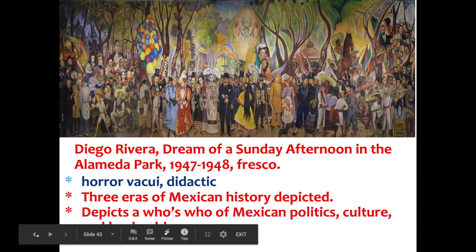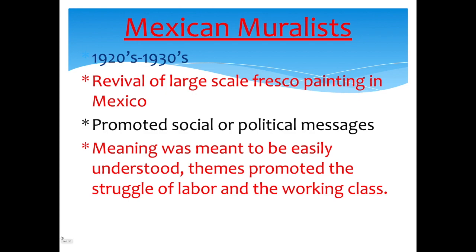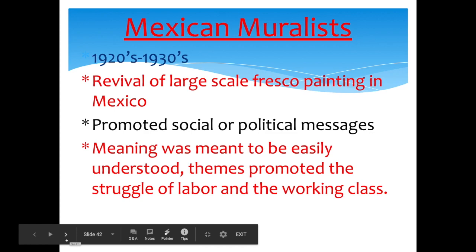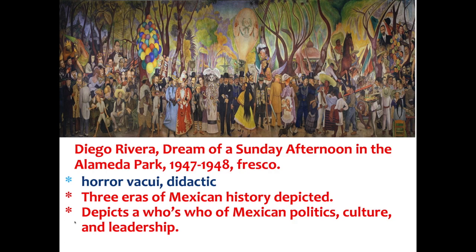Now some artists from the Mexican Muralist period. In the 1920s and 1930s, artists like Diego Rivera created a revival of large-scale fresco paintings popular in Mexico in the 1800s. They promoted social and political messages meant to be easily understood, with themes of labor and the working class. The painting to know is Diego Rivera's 'Dream of a Sunday Afternoon in the Alameda Park,' located in Mexico City. It has a horror vacui — every little space is covered. It is a fresco meant to teach — it's didactic — and it shows three eras of Mexican history.